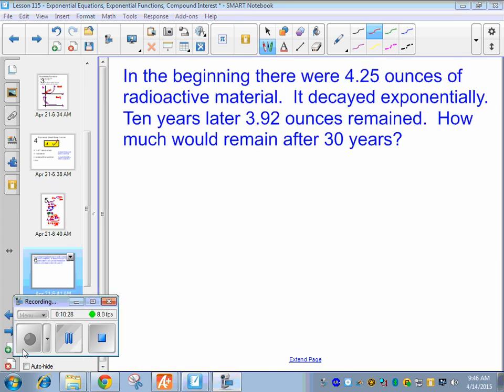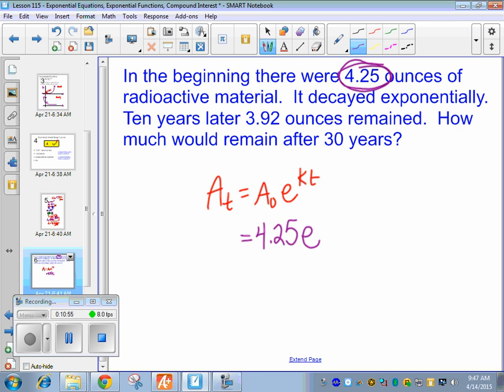Okay, let's try an exponential decay problem. So same formula, a sub t equals a naught e to the k times t. So in the beginning, there were 4.25 ounces of radioactive material. So in the beginning, there were 4.25 ounces. Where do we plug this in for? It decayed exponentially. So again, don't use the last sentence until we plug this in. This is a coordinate point, and don't miss this number here because it's not written as a number. 10 years later, we have 3.92 ounces. So after 10 years, there were 3.92 ounces. So the answer, we get 3.92 after 10 years. So 10 for t, 3.92 for answer.